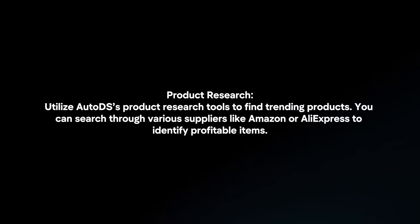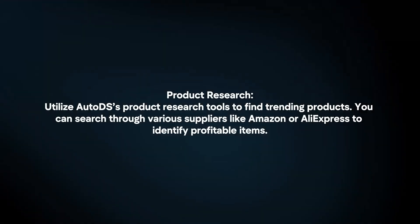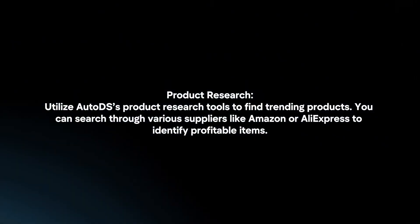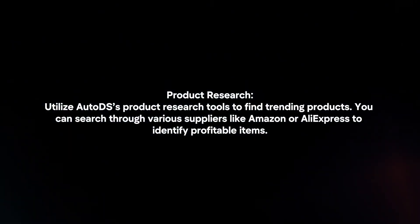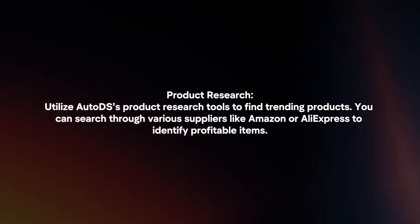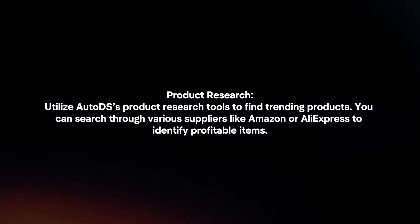Product research: utilize AutoDS's product research tools to find trending products. You can search through various suppliers like Amazon or AliExpress to identify profitable items.